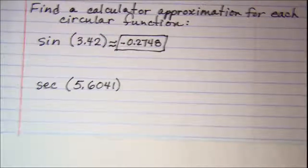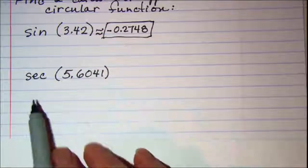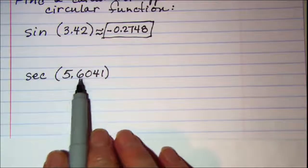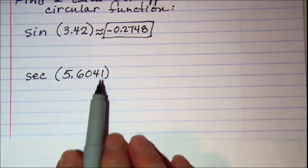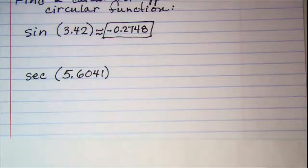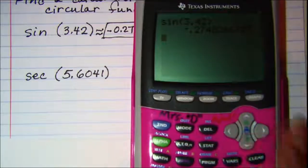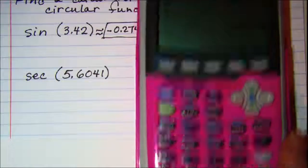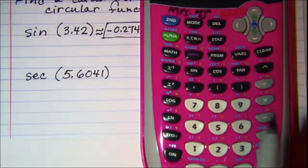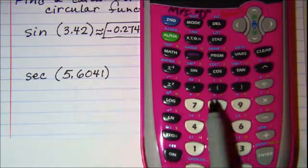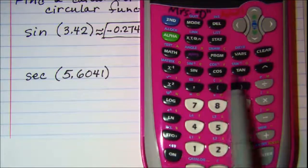And our next one we're asked to find the secant of 5.6041 radians. Now on our calculator notice that we don't have secant, all we have is sine, cosine, tangent,